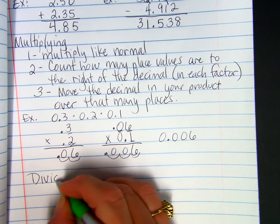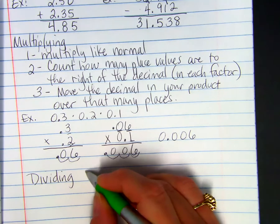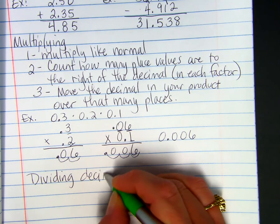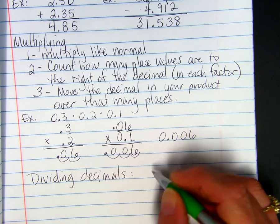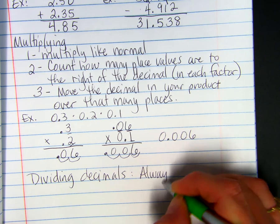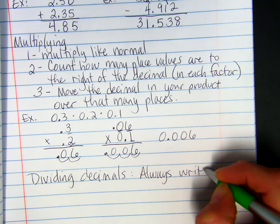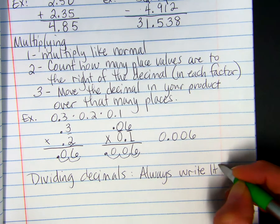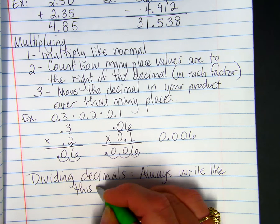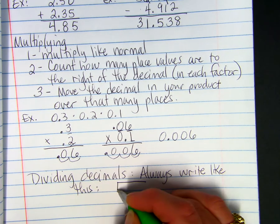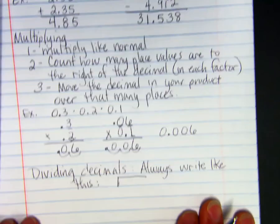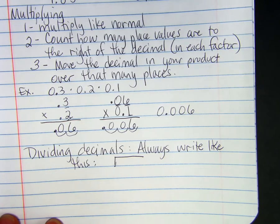When we are dividing with decimal numbers, you want to be sure and always write like this. In other words, with the division box. Okay? You want to use the division box.